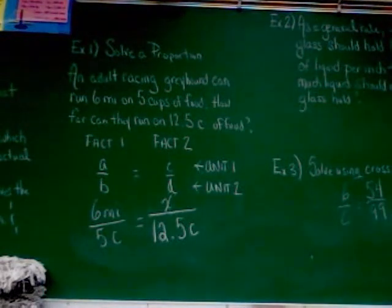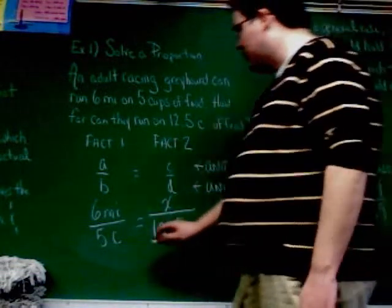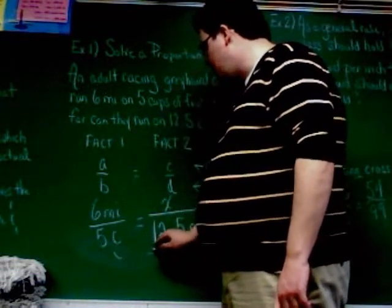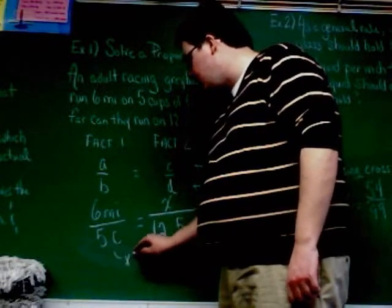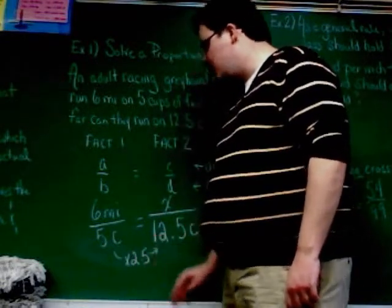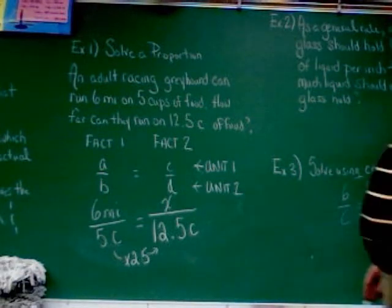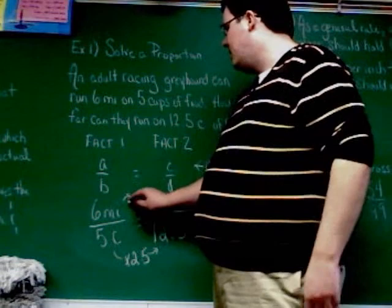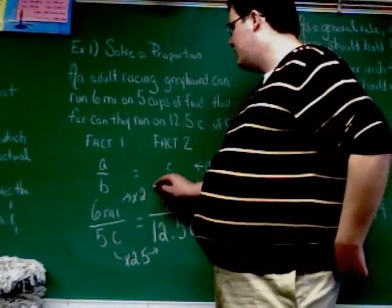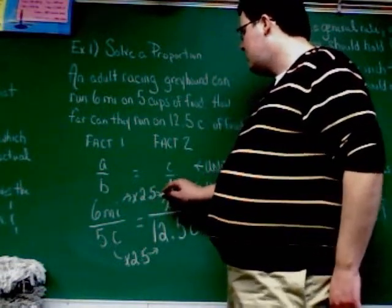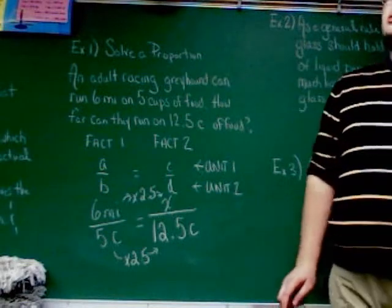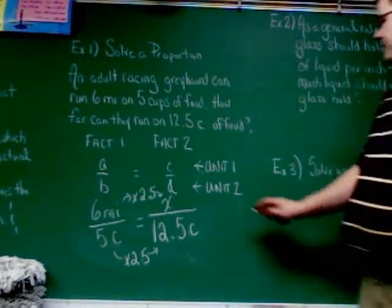So that top right corner is going to be where I'm going to put my variable x. Now, you can use cross products or scale, I'm going to use scale here. The reason I'm going to use scale is because I can pretty easily figure out to go from 5 to 12.5, I have to multiply by 2.5. Five times 2.5 is 12.5. So, I'm going to do the same thing on the top, multiply by 2.5, and six times 2.5 is going to give me 15.